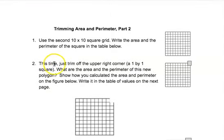This time just trim off the upper right corner, a 1 by 1 square. So here's what your new polygon, no longer a square, is going to look like. You just trimmed one square out of it.